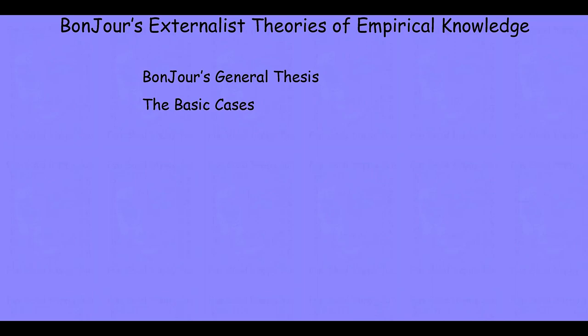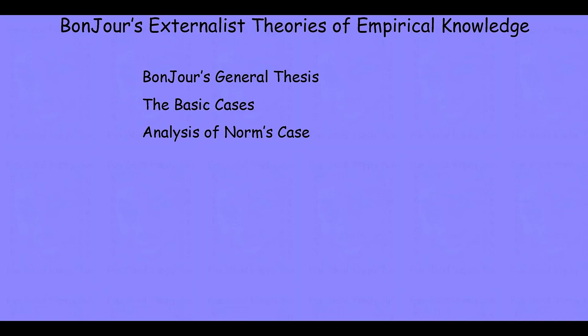Then we'll talk about how Bonjour introduces four basic cases — four counter-example cases — that he hopes generate an intuition that supports his thesis. When we get to that fourth case, the case of Norman, we're going to want to look at that case a little more closely, and our analysis will reveal that Bonjour is making an assumption.